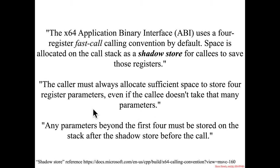So that explains why before when we saw the simplest function with zero parameters calling another function, we actually saw this hex 28 worth of allocation. 8 for padding and space for four eight byte registers. And any parameter beyond the first four must be stored on the stack after the shadow store before the call.